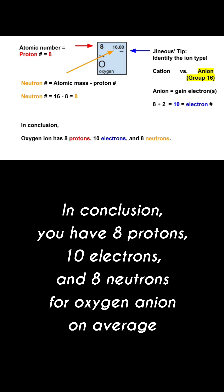In conclusion you have 8 protons, 10 electrons, and 8 neutrons for oxygen anion on average.